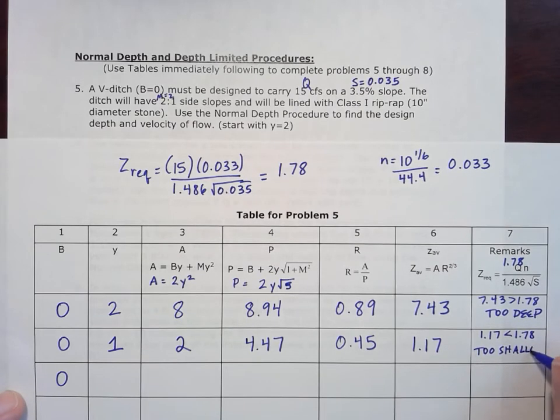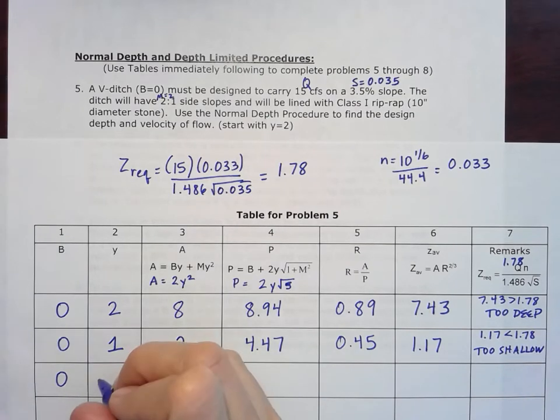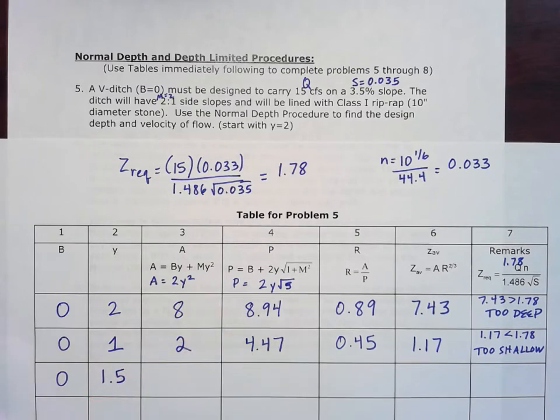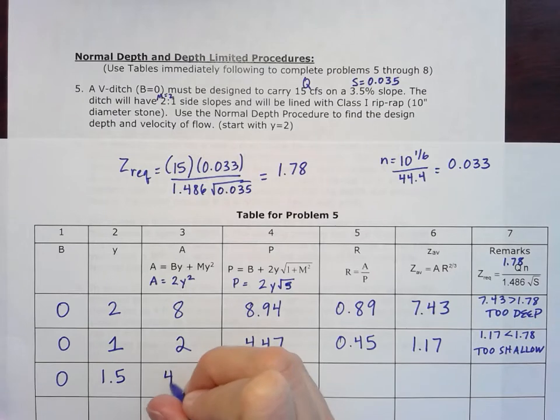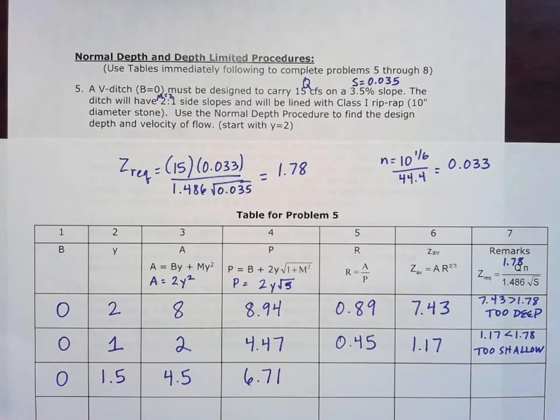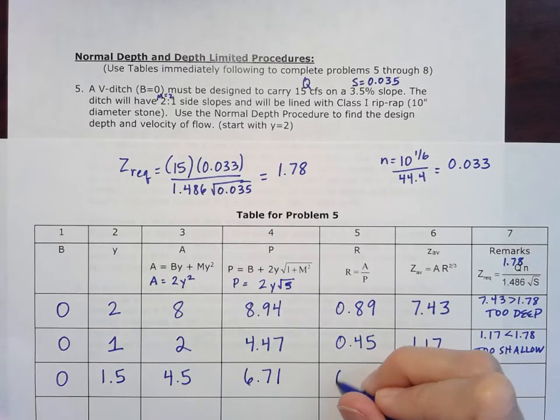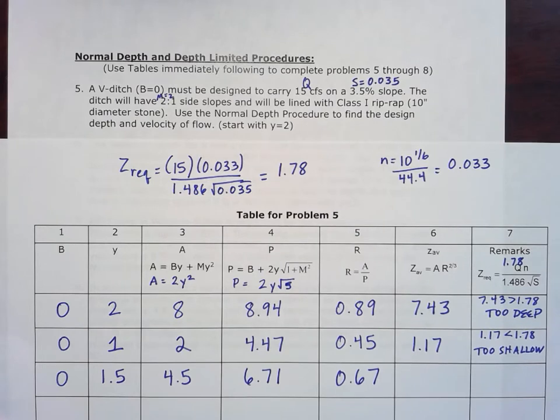I'm going to need a little bit more than one foot of depth. I usually go to the halfway point, so I went to 1.5 here. My area becomes 4.5, my wetted perimeter 6.71, hydraulic radius 0.67, and z average I get 3.45. So I'm back to too deep here. A little bit too big with that 1.5. That 3.45 is greater than 1.78, so I'm a little too deep here.